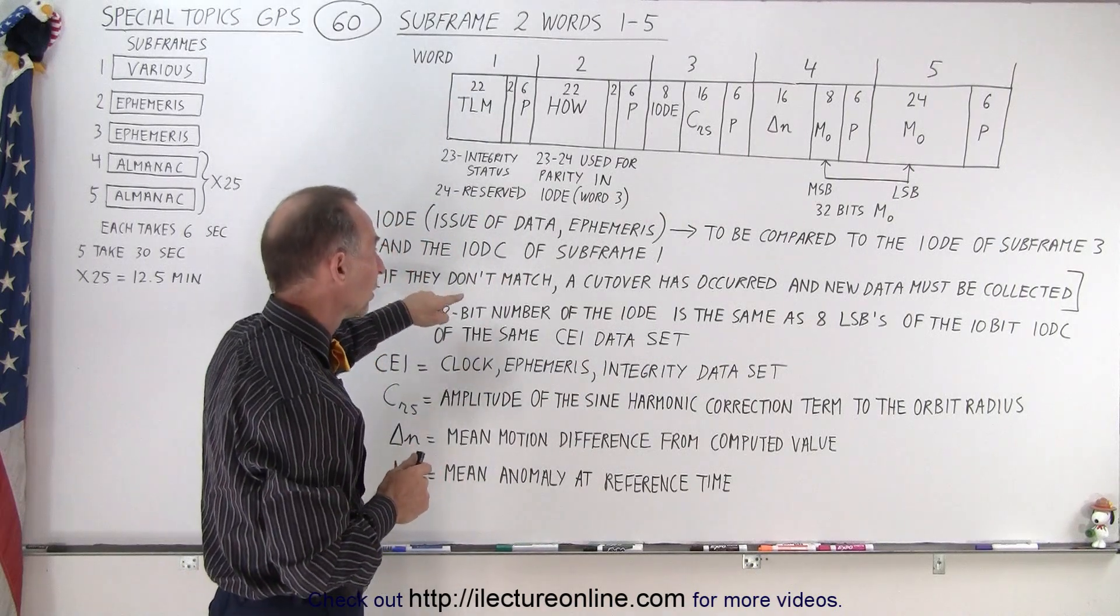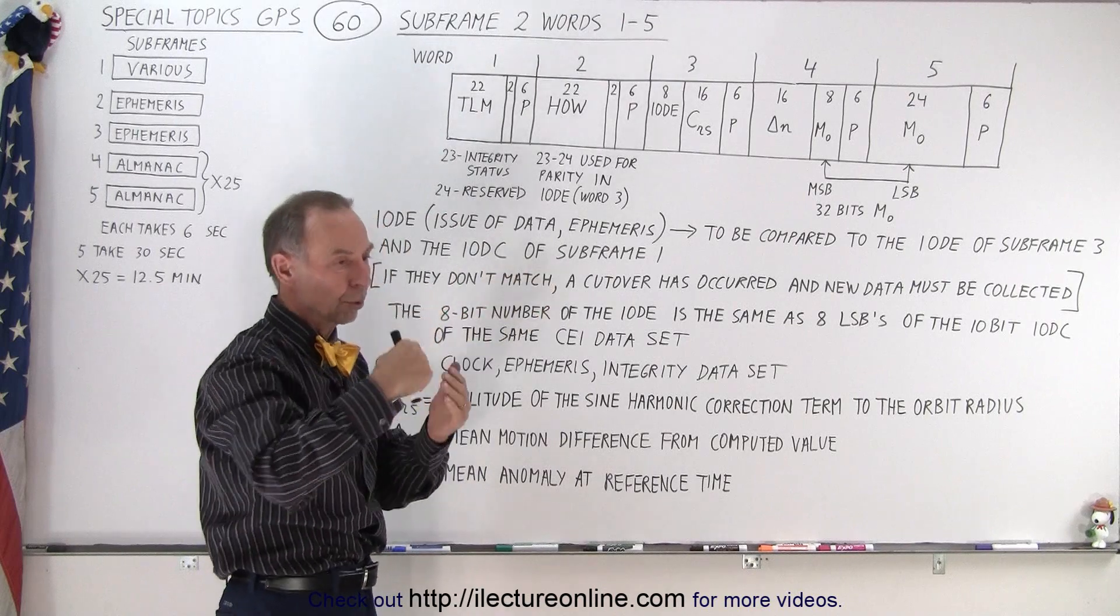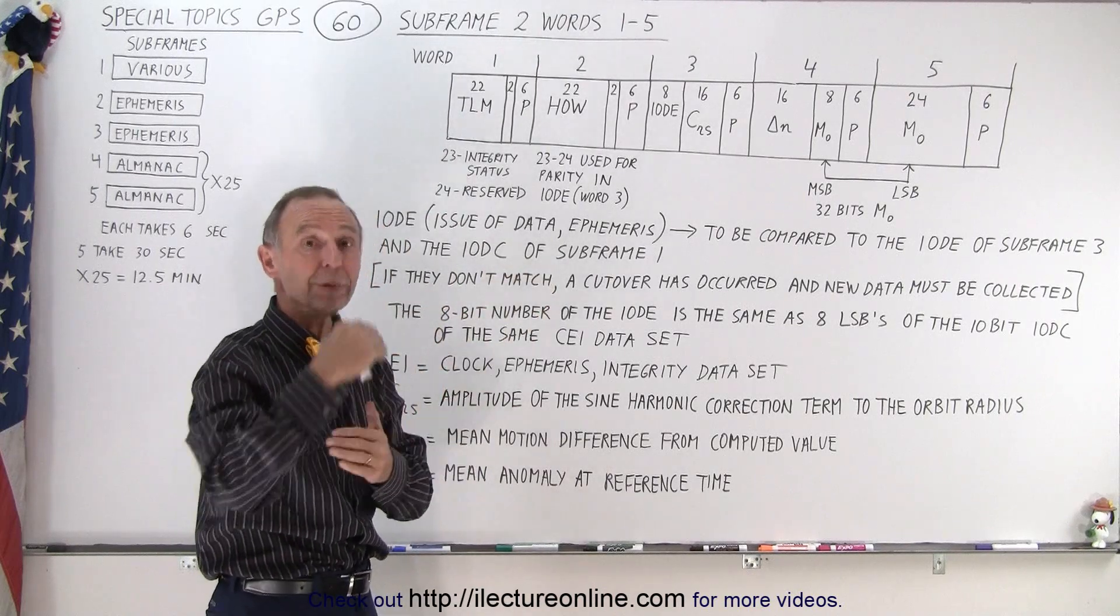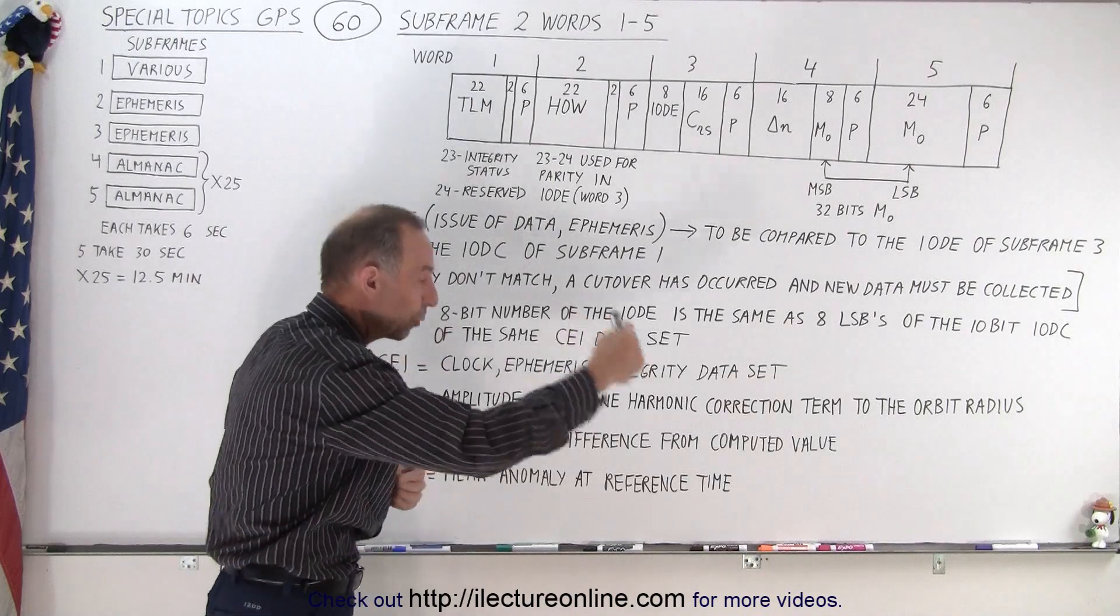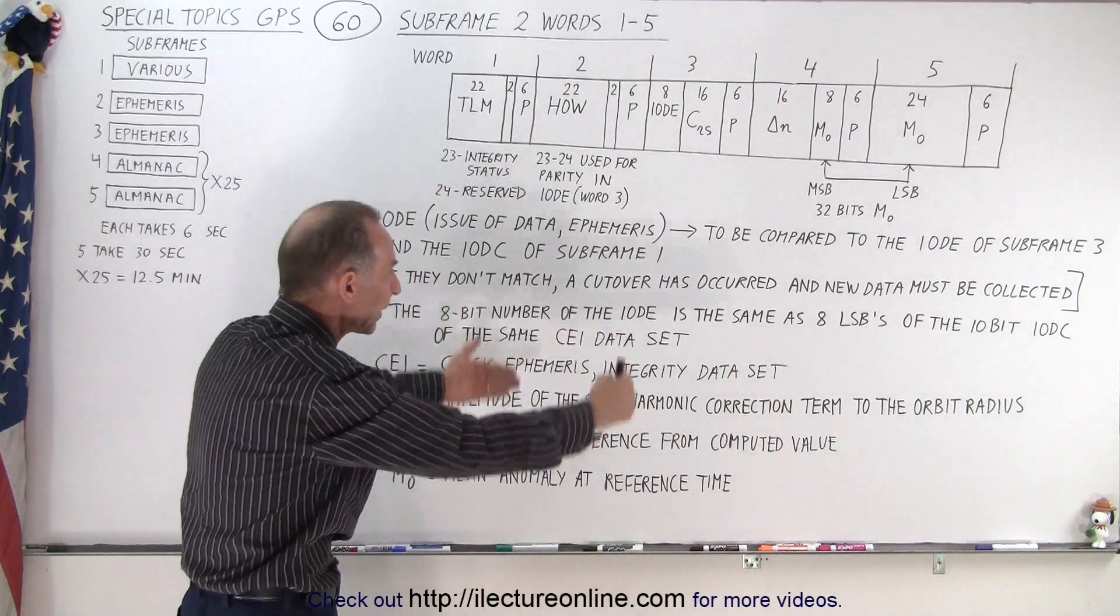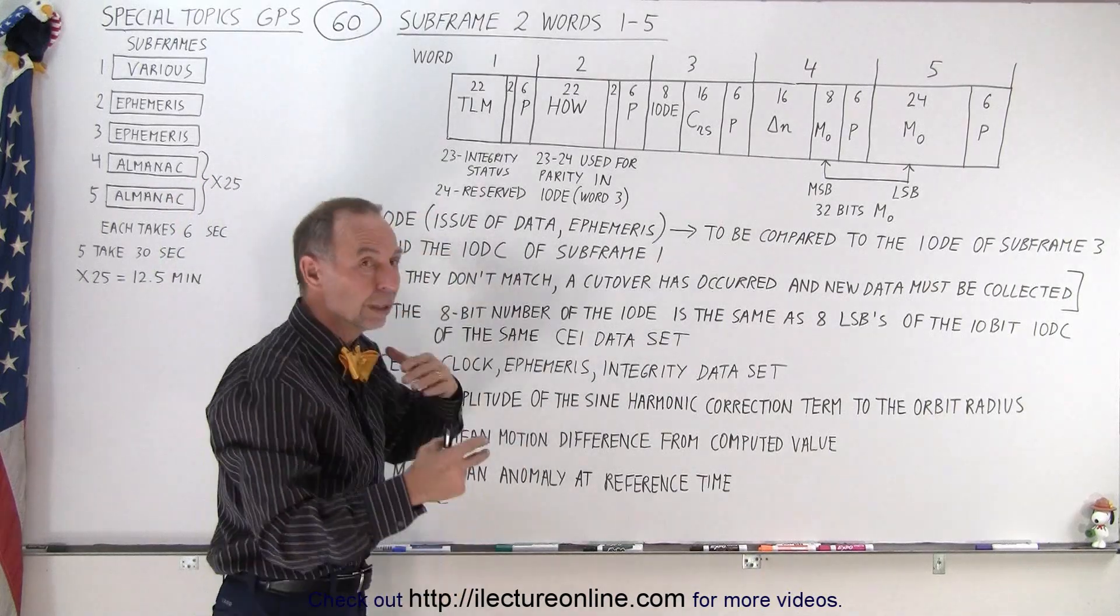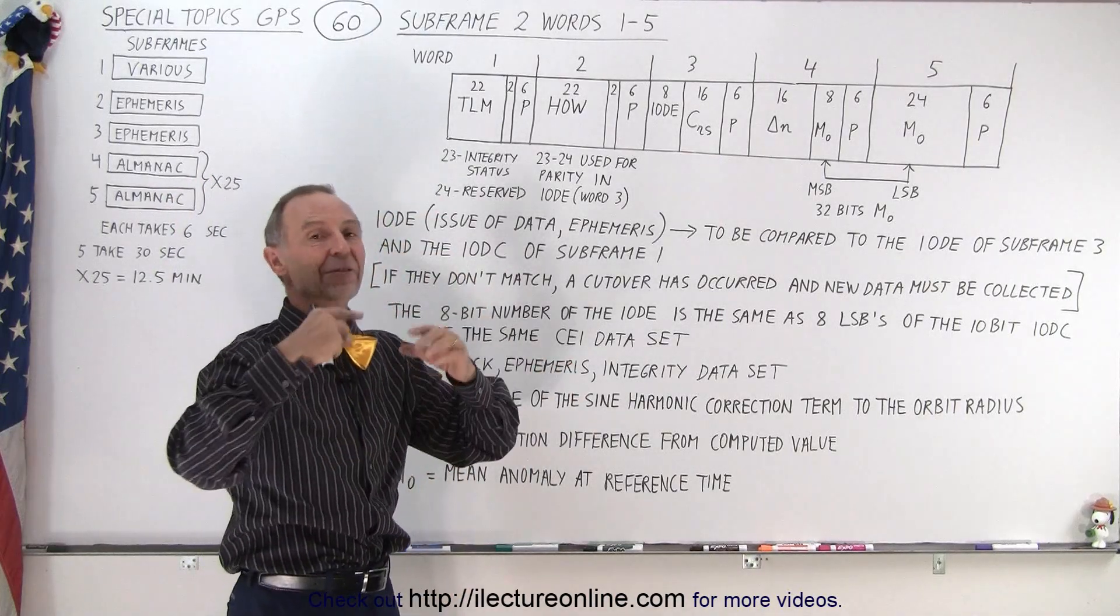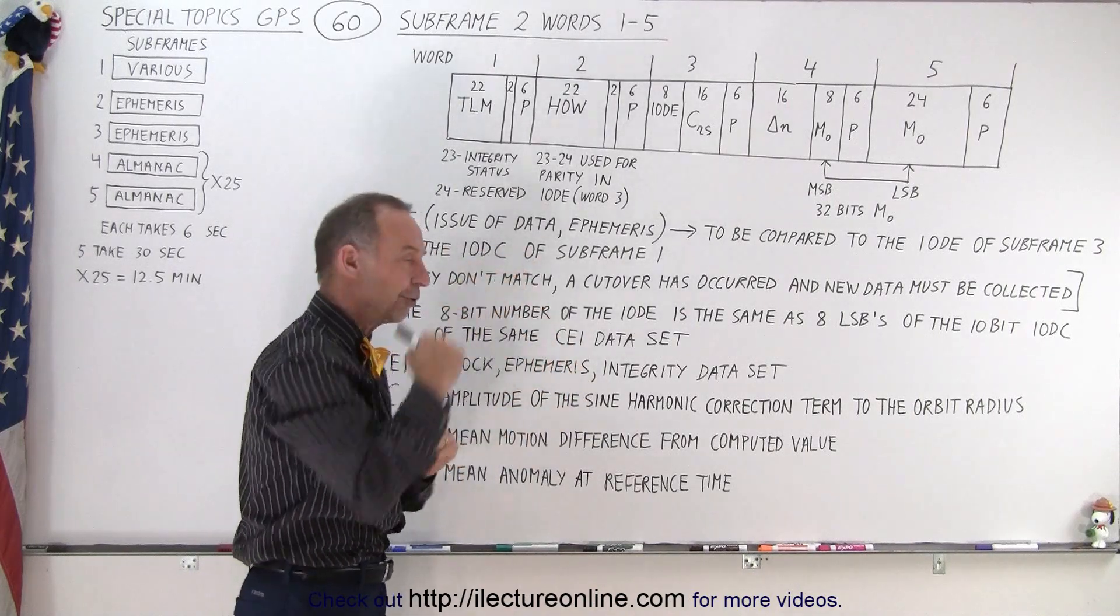If they don't match, that means we just had a cutover. Like at the 4 hour limit or if we have the data for long it could be the 6 hour limit or the 12 hour limit. But typically after 4 hours we have what we call a cutover where we get a new set of ephemeris data. And then we realize we just had a cutover so now we have to recollect the data which is now going to be more accurate for the next 4 hours.